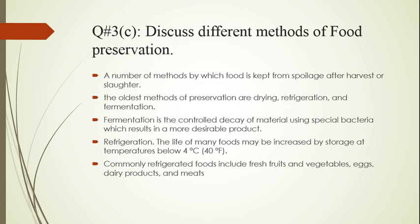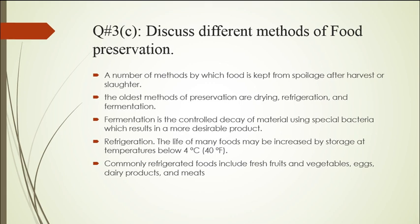Now come to question 3 part C: Discuss different methods of food preservation. Food preservation is the use of methods by which food is kept from spoilage after harvest or slaughter. The oldest methods are drying, refrigeration, and fermentation. Fermentation is the controlled decay of material using special bacteria, which results in a more desirable product. Refrigeration: the life of many foods may be increased by storage at temperatures below 4°C or 40°F. Commonly refrigerated foods include fresh fruits, vegetables, eggs, dairy products, and meats. Freezing and frozen storage also provide an excellent means of preserving the nutritional quality of food.